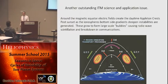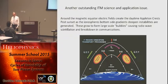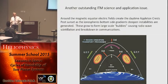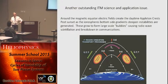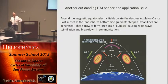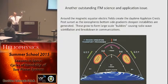Why is it called Iridium? The original plan was to put 77 up — the atomic number of iridium — but 66 is the effective constellation that works. They have about 10 to 12 lying as spares in each orbital plane so they can move things around. What happened to one of the dead Iridium satellites? It crashed — that was the collision Harry Warren showed in his picture.